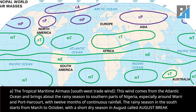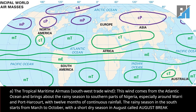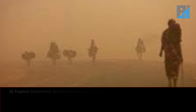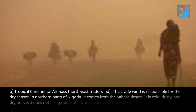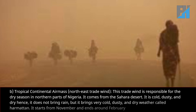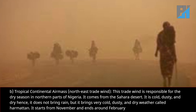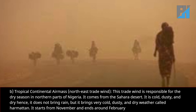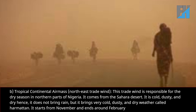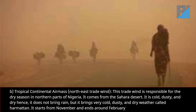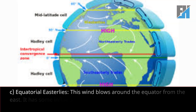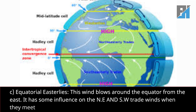The rainy season in the south starts from March to October, with a short dry season in August called the August break. Second, the Tropical Continental air mass — the Northeast trade wind. This trade wind is responsible for the dry season in northern parts of Nigeria. It comes from the Sahara Desert; it is cold, dusty, and dry, so it does not bring rain but brings very cold, dusty, and dry weather called the Harmattan. It starts from November and ends around February.